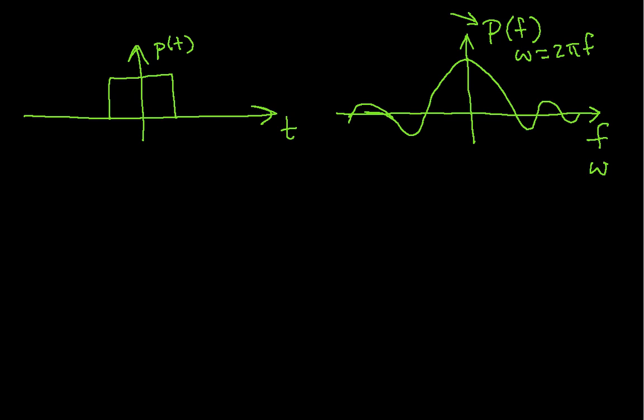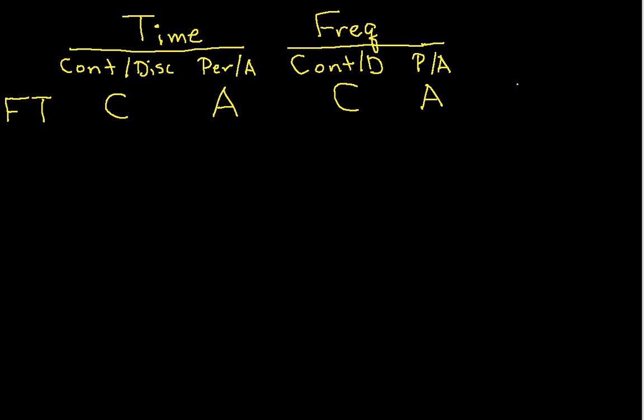You should also be aware that the Fourier transform is typically a complex function, so for every value of f it gives you a complex number. In this particular case, the Fourier transform of this rectangular pulse is only real-valued — there is no complex value. So the goal here is just to get a conceptual understanding. Going back to the table, the next thing we'll look at is the Fourier series. The Fourier series is obtained when you have a signal that's continuous in time but periodic, and as a result the frequency ends up being discrete and aperiodic.